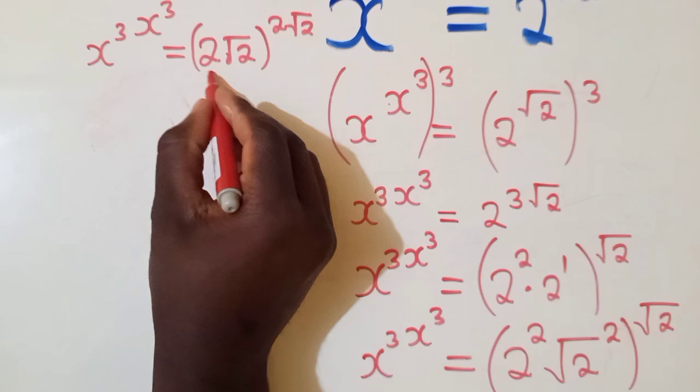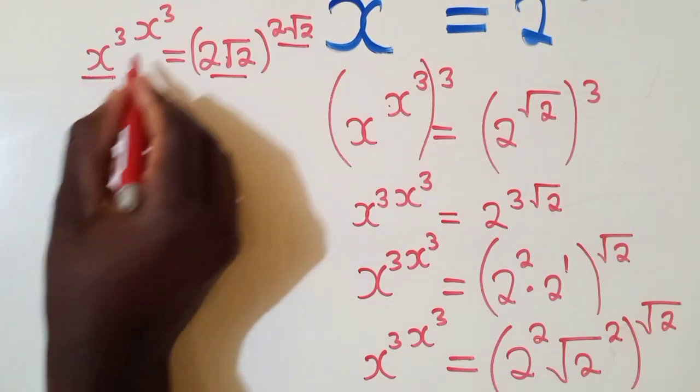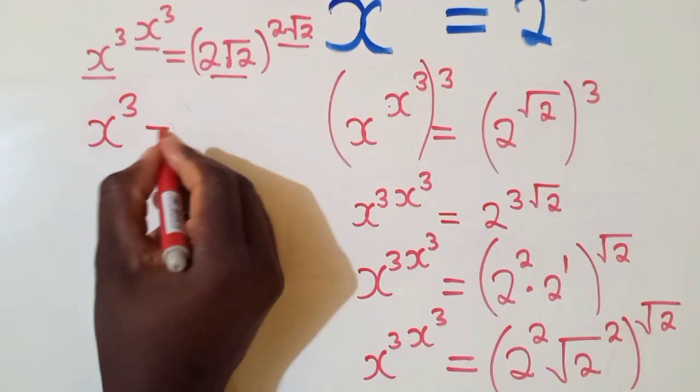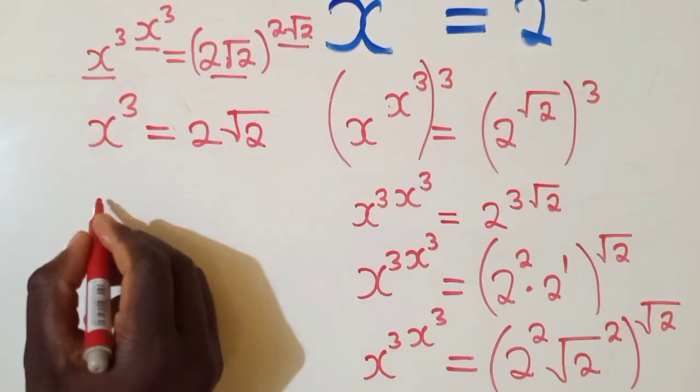Since now the base and the power are the same, and here the base and the power are the same, we can say x power 3 is equal to 2 root over 2.